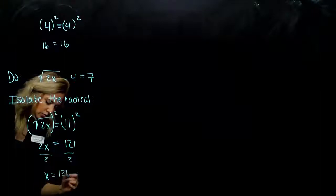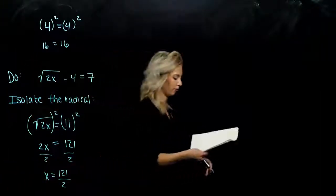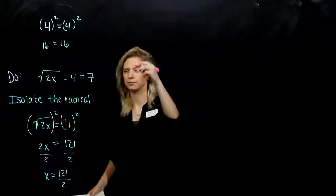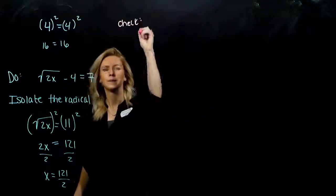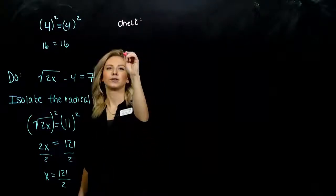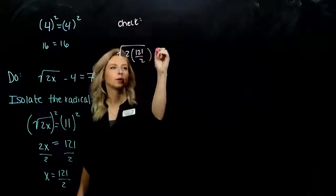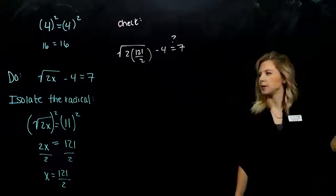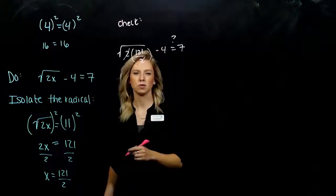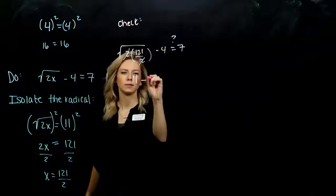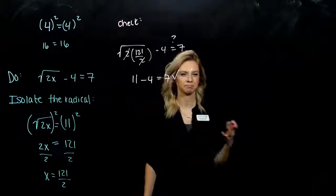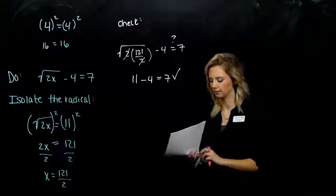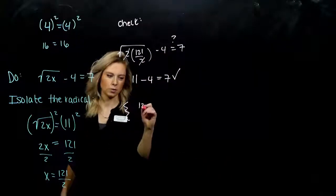So my x value that makes that equation true is 121 over 2. And as always with these kinds of equations, we want to check in the end to make sure our solution actually holds true. Let's check: x is 121 over 2, so on the inside of the radical those 2s cancel, and I'm looking at the square root of 121, which is 11. If I have 11 and take away 4, is it equal to 7? Yes. Check was pretty straightforward. In the very end, my solution set is 121 over 2.